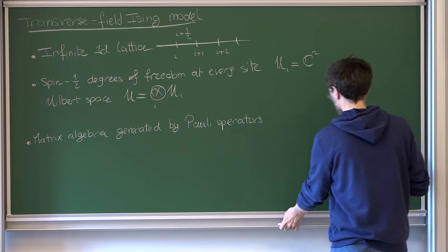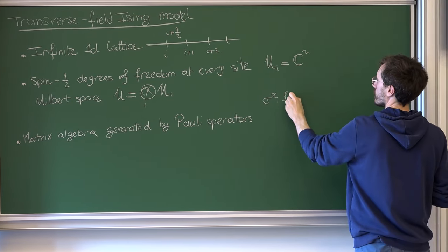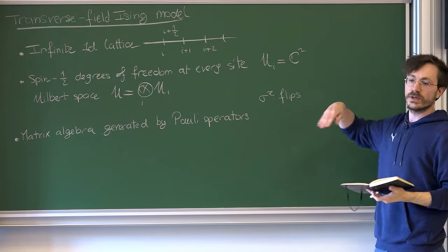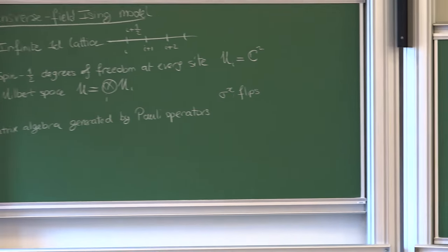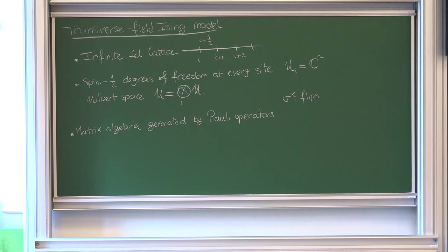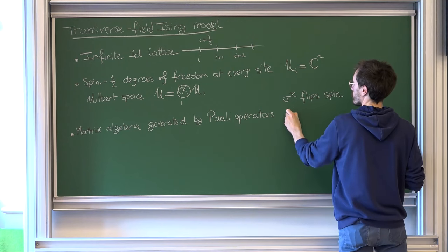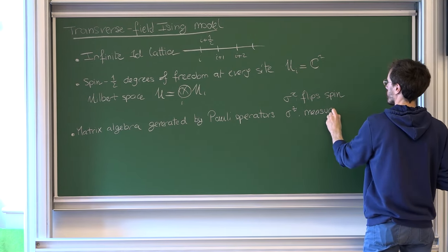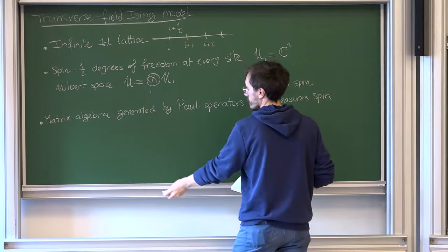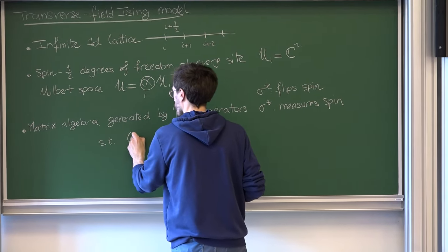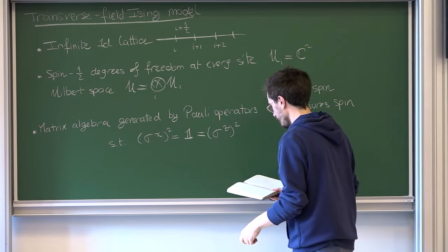Acting on these degrees of freedom we have a matrix algebra of operators generated by Pauli operators. The first one, σˣ, is an operator that flips a spin — we have a two-dimensional Hilbert space where the spin-1/2 can be either up or down, and this operator swaps between them. We have another operator σᶻ that measures the spin. These satisfy the defining algebraic property: both square to the identity, and they anti-commute.